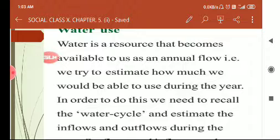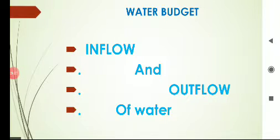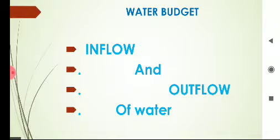To plan water use, we should have knowledge about the water cycle as well as water budget. Just like for income we make a budget — estimating our incomes, expenditures, and savings — a water budget is the estimation of inflow and outflow and the water which we can save for use. All these estimations are included in the water budget. The idea of a water budget would apply to small or large regions such as a village or a district.